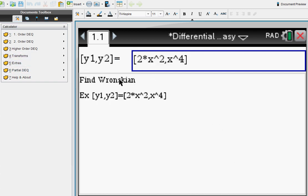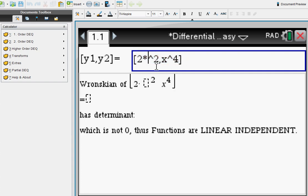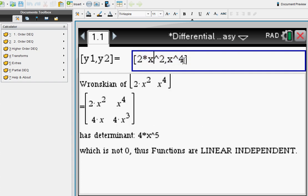Extras: if you need to find the Wronskian, for example, you just enter your two given functions. In this case we have two polynomials, and you can see that the determinant here is not always zero, so therefore these two functions that you entered are not linearly independent.